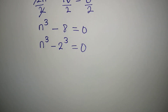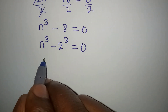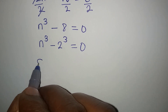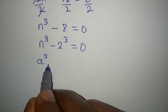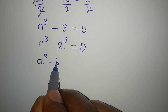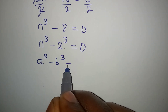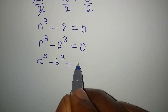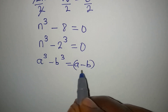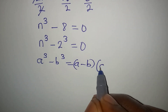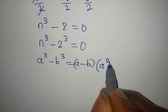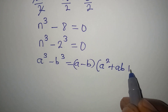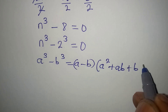If this is the case, then we can apply the standard that if you have a to the power of 3 minus b to the power of 3, this should give a minus b, into a squared plus ab plus b squared.